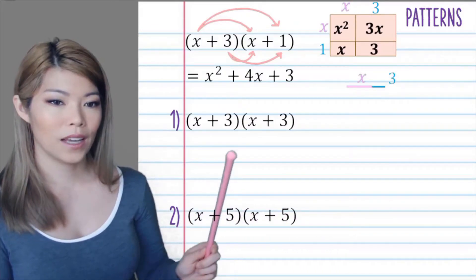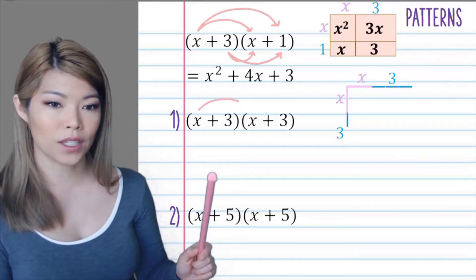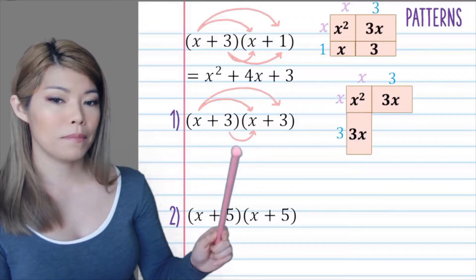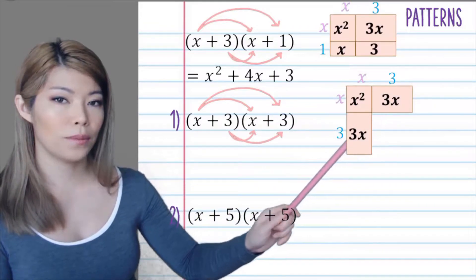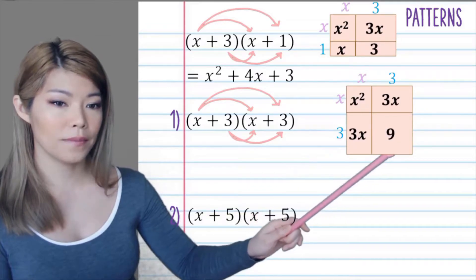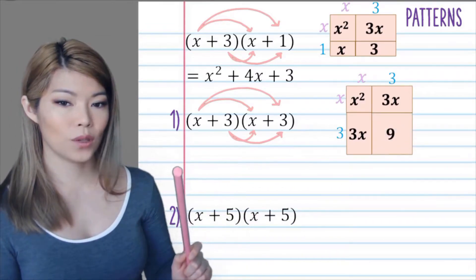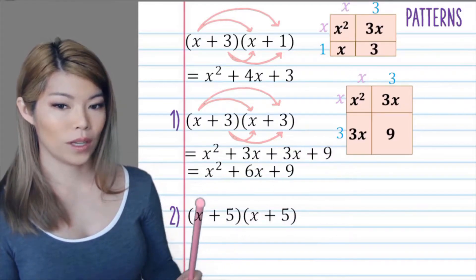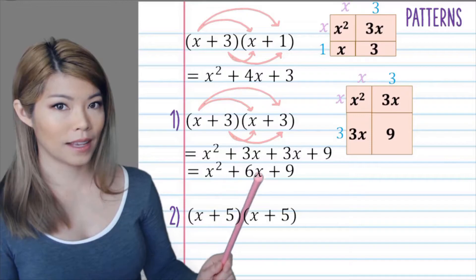Let's have a look. If we have x plus 3 times x plus 3, we can see that the first term is still x squared, but the middle two terms, instead of them being different, they're going to be identical. So 3x and 3x, and the last term is 9. So we have x squared plus 3x plus 3x plus 9, and we obtain x squared plus 6x plus 9.